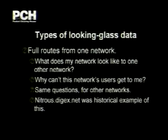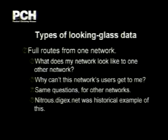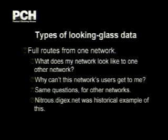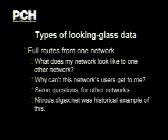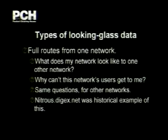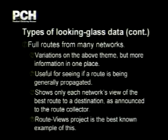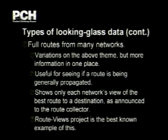There are a bunch of different types of data that get used in looking glasses. A lot of them — I think most of them — are full routes from one network. You can use one of these to figure out what your network looks like from another network's perspective, or if you want to know why that network's users can't get to you, you can look and see if they have routes back to you. And then there are looking glasses that take full routes from many networks, which is what the RouteViews project does — it's basically a lot more data in one place.